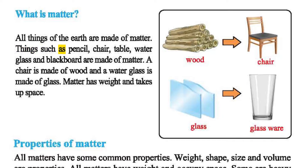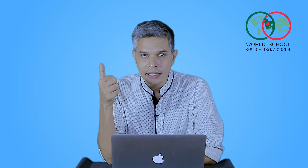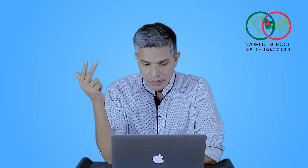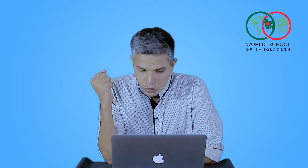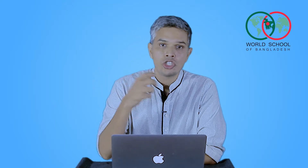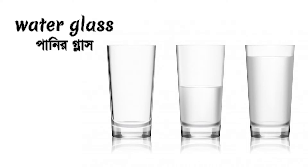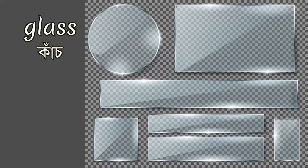Things such as pencil, chair, table, water glass, and blackboard are made of matter. A chair is made of wood, and a water glass is made of glass.